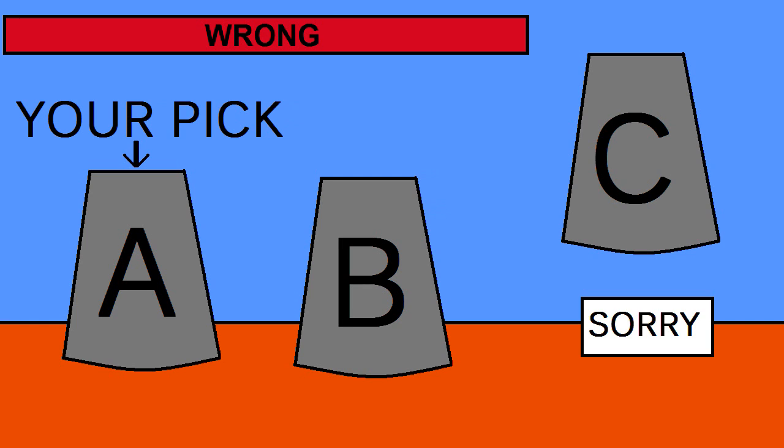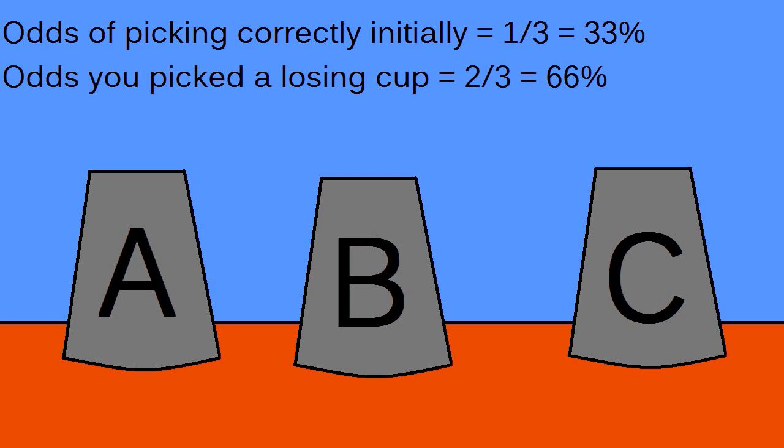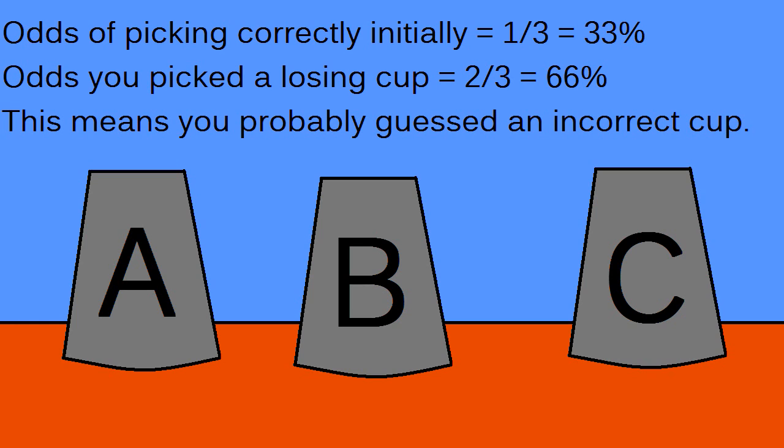Let me explain. When the host initially asks you to choose a cup, the odds of you choosing a winner is 1 out of 3, or about 33%. This means that the chances you did not pick the winner is 2 thirds, or 66%. Basically, you most likely have chosen a cup that's a loser on your initial guess.